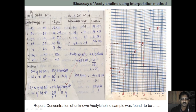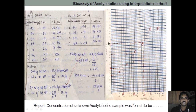Now you take the average of these three values, because we are getting three different concentrations. After taking the average, the final result is: the concentration of the unknown acetylcholine sample was found to be 1.83 micrograms per ml. It is a very easy experiment — through this we can find the concentration of acetylcholine present in an unknown sample. It is the interpolation by bioassay method. You can perform it, draw it, and calculate it. Thank you.